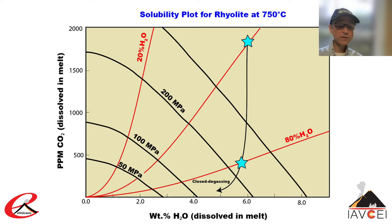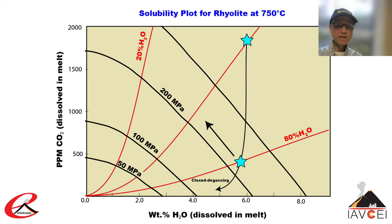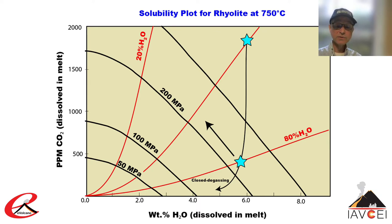If the magma stalls out at 230 MPa, the melt will have about 5.8% dissolved water and a vapor phase with 80% water. And if we add a CO2-rich gas, the melt composition will migrate along the 220 MPa isobar along the black arrow. This could happen if CO2-rich gas bubbles were added to the magma from below. So now we've talked about water and carbon dioxide — two of the most abundant and relatively straightforward volatiles, at least in the upper 5 km or so.